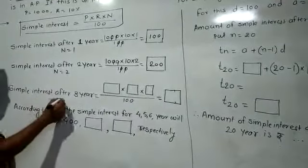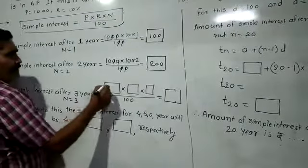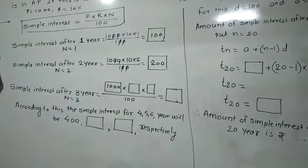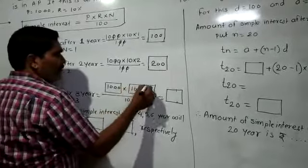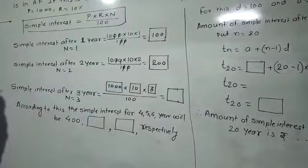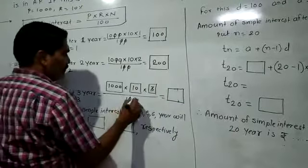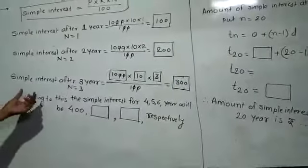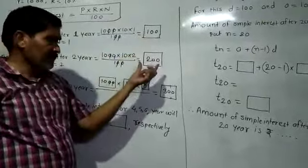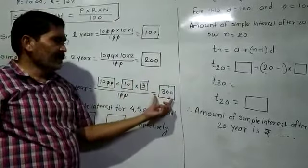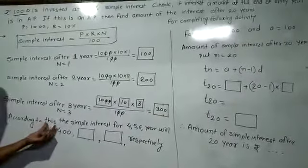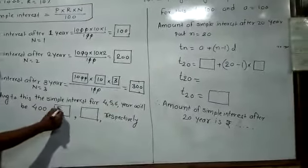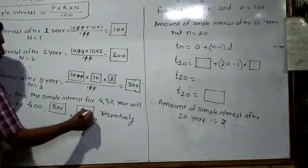For the simple interest after the third year, N = 3. The principal and rate remain the same for each year. Putting the values: 1000 × 10 × 3 ÷ 100. Striking the two zeros, 10 × 3 = 300. So the 1st year interest is ₹100, 2nd year ₹200, 3rd year ₹300. According to this pattern, the 4th year interest is ₹400, 5th year ₹500, and 6th year ₹600 respectively.